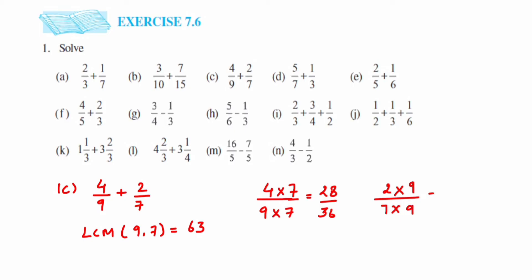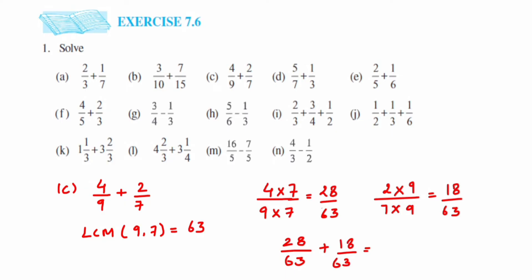For 2 by 7, we multiply by 9 to get 63, giving 18 by 63. Now adding: 28 upon 63 plus 18 by 63. Since denominators are the same, add the numerators: 28 plus 18. Adding the units digits: 8 plus 8 is 16, carry 1, then 2 plus 1 plus 1 is 4, giving 46. So the answer is 46 by 63. We cannot reduce further, so we leave the answer here.